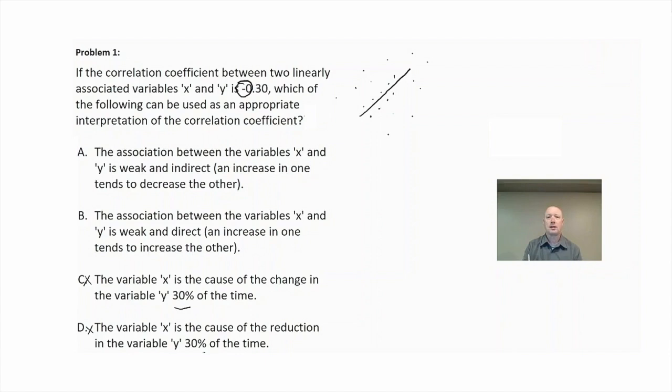Or as the x gets smaller, the y gets bigger. So it would not be a direct relationship. That means that choice B is a direct relationship, so that's eliminated. In this case, the correct answer is choice A.